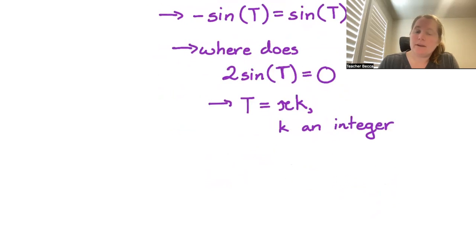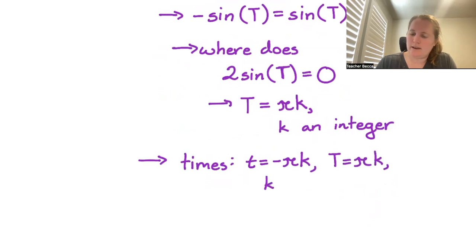So we can pick our points, t = -πk and the capital T = πk for k an integer.